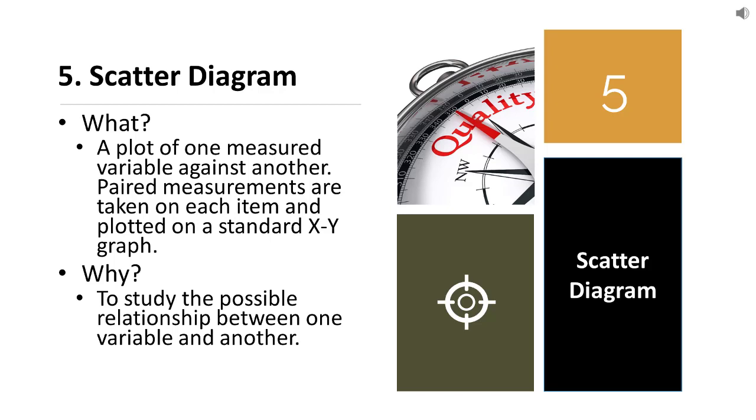So, in case of ice cream sale, the temperature was an independent variable. So, temperature is plotted on the x-axis and sale was a dependent variable. Sale is a dependent variable because sale is depending on temperature. That is what we want to prove. So, sale goes on the y-axis.